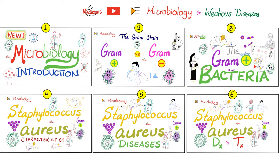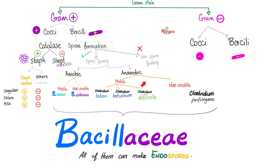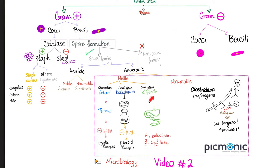Please watch these videos in order. Clostridium difficile is a gram-positive rod. It is spore-forming, anaerobic, and motile. Clostridium difficile produces two famous toxins: Toxin A is the enterotoxin, and Toxin B is the cytotoxin.